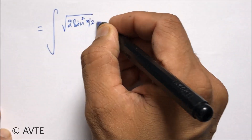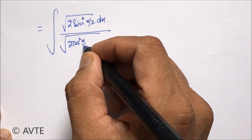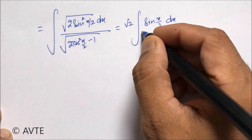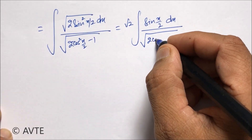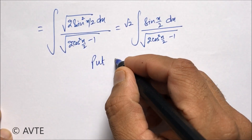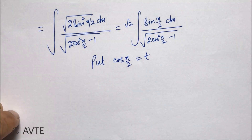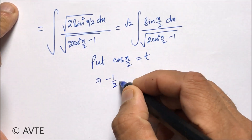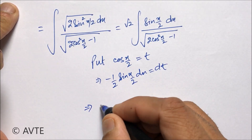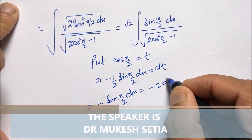We now substitute cos(x/2) = t. This substitution transforms the integral into a standard recognizable form.